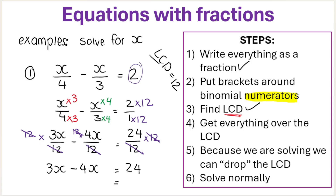So 3x minus 4x is negative 1x, equals 24. This negative x is negative 1 multiplied by x. You do the inverse operation — the opposite of multiplying by negative 1 is dividing by negative 1. So 24 divided by negative 1 is negative 24. And that's my first answer.